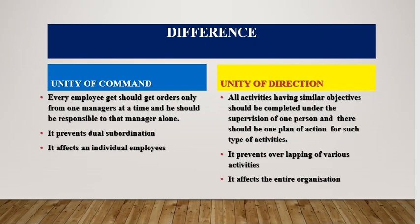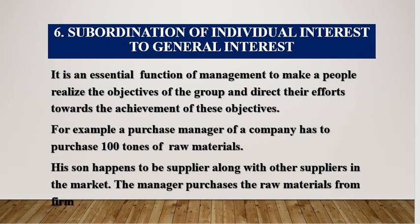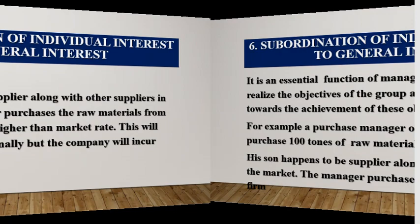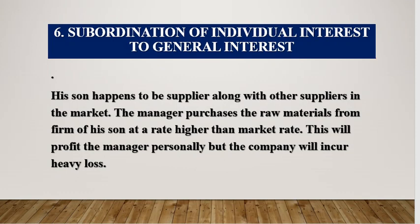Subordination of individual interest to the general interest is an essential function of management — to make people realize the objective of the group and direct their efforts towards those objectives. For example, a purchase manager wants to purchase raw materials from his son's firm, benefiting personally. But working on the company's side, he must consider competitive rates. The manager purchasing from his son at a higher rate profits himself personally but the company incurs heavy loss. So when we work in an organization, we must prioritize the general interest.